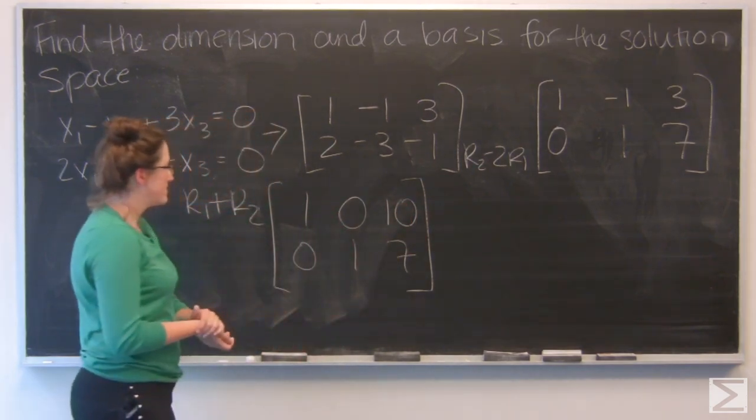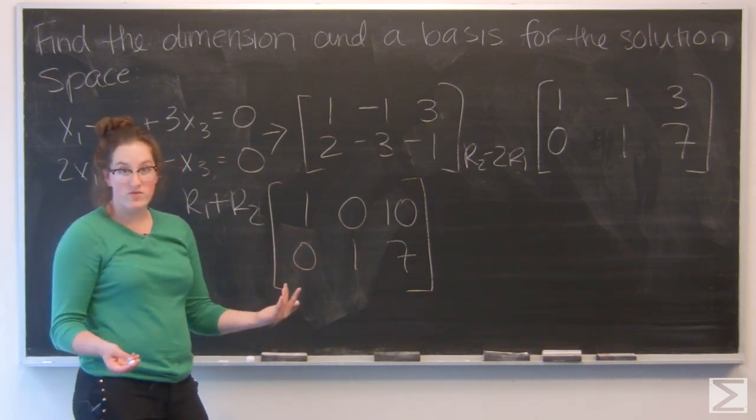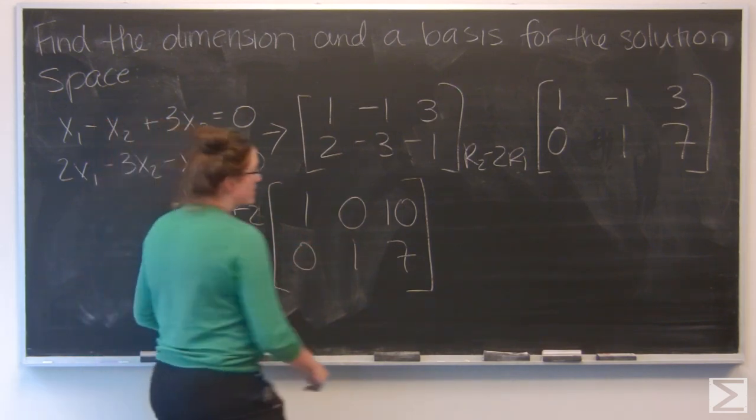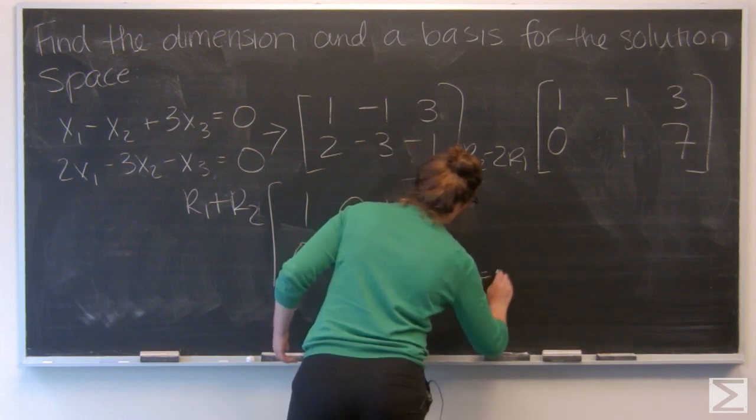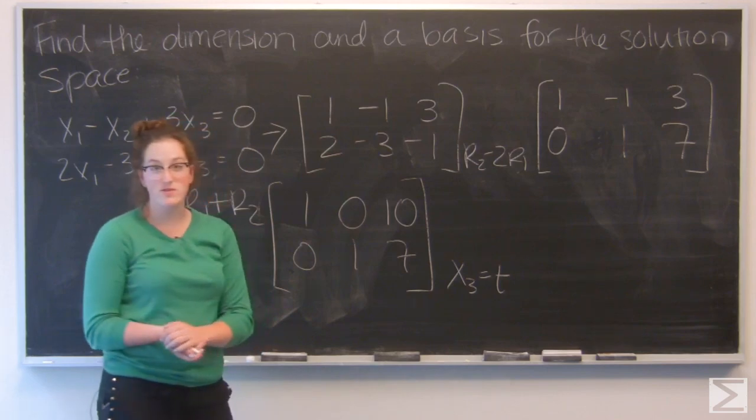Now, I want to write the solution for this in vector form. I have x3, but it's going to be a free variable. I'm going to call it t. That leaves x2 plus 7t equals zero. x2 equals negative 7t.